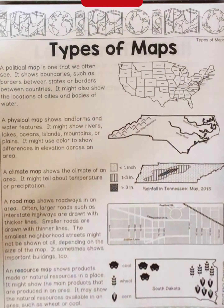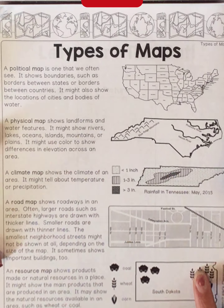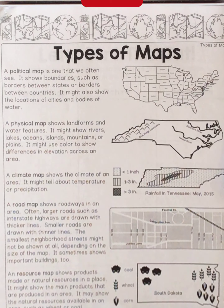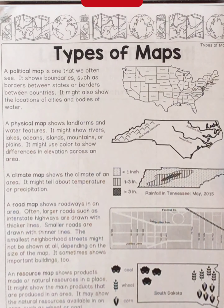Hey there fourth grade, we're going to go ahead and take a look at one of the assignments for this week. This is the assignment assigned for Tuesday's map skill, and what this map skill is actually doing is going over different types of maps — maps that we've looked at some in social studies, but not all.